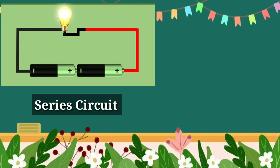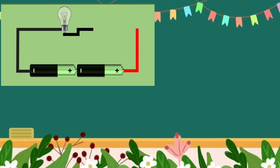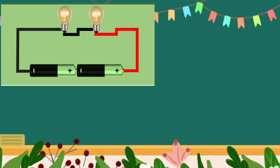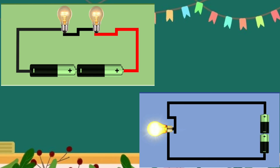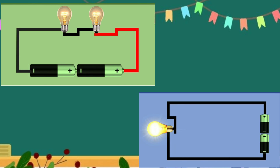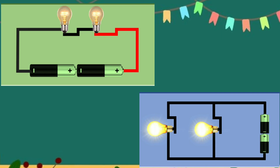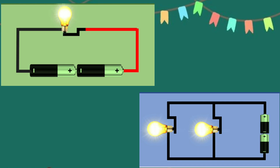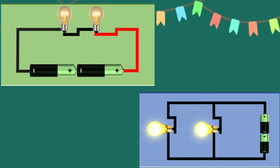Let us watch this video animation. If we light up one bulb in the series circuit, the bulb will light bright. But if we add another one, the two bulbs will become dimmer. And if we compare with the bulbs in the parallel circuit, the bulbs in the series circuit are dimmer. As we can see here, the bulbs in the parallel circuit are brighter because they do not share the electric current that flows in the circuit.